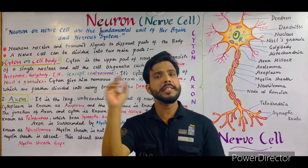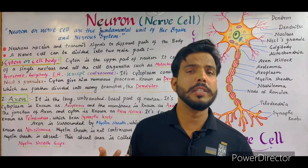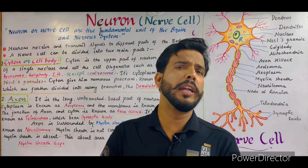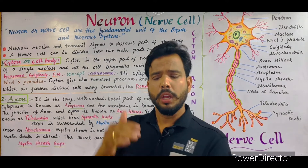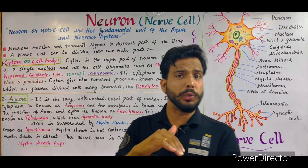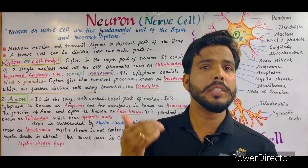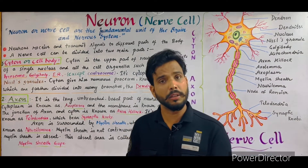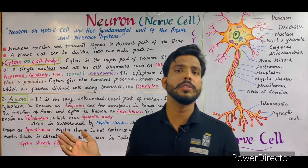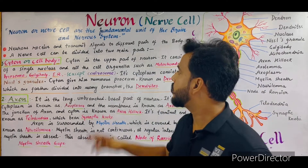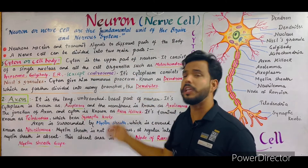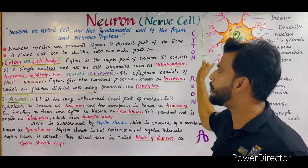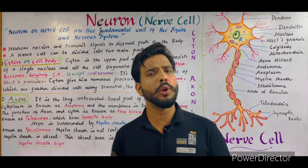Neurons receive and transmit signals to different parts of the body from the surroundings. Our neurons receive signals with the help of our sense organs. Suppose we touch any surface — that may be cold, warm, or hot — our skin receives the signals, and these signals are carried by the neurons to the brain, and from the brain they are carried to different parts of the body for the response. So the neuron receives and transmits signals in the form of nerve impulses to different parts of the body.